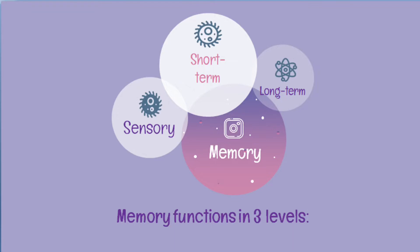Short-term memory is where information is temporarily stored. It is also where information is simultaneously remembered and is in a readily available state. Typically, the information is stored from 10 to 15 seconds up to 1 minute. Short-term memory can only store 5 to 9 items, after which the information is discarded if there is no conscious and deliberate effort to retain it. However, when there is a deliberate effort to store information, and it is done consistently and with practice, then this information is transferred to long-term memory.